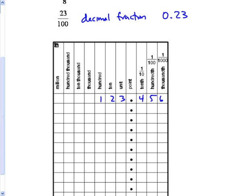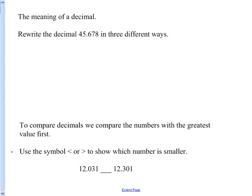So what do we want you to be able to do? Well, firstly, if we give you a decimal like that, you should be able to write it three different ways. So I would rewrite this. One way is to say, four tens, five ones, and six tenths, seven hundredths, and eight thousandths.